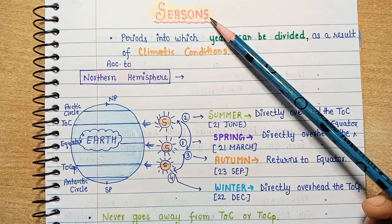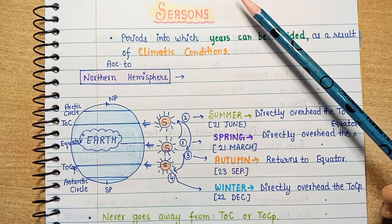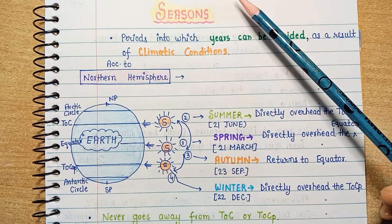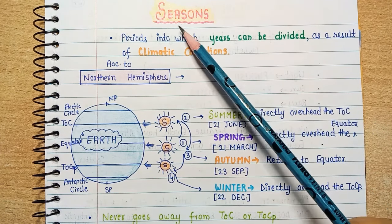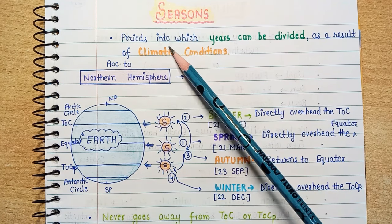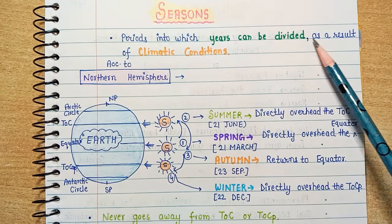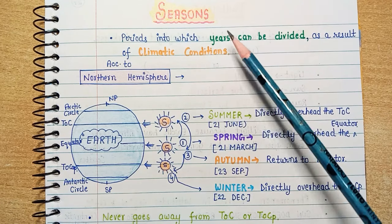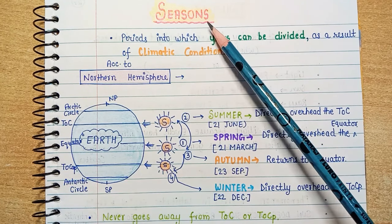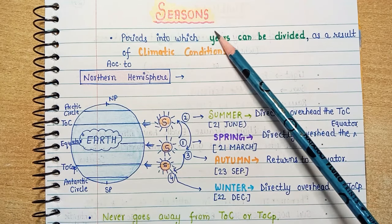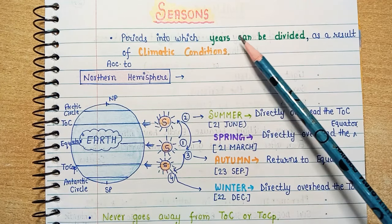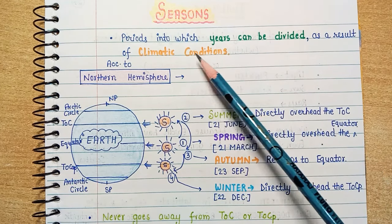So let's start with the first topic which is seasons. What are all the seasons? Let's talk about the theoretical way. What are seasons? Seasons are periods into which years can be divided as a result of climatic conditions. Season is a time period by which we can divide the whole year based on climatic conditions.